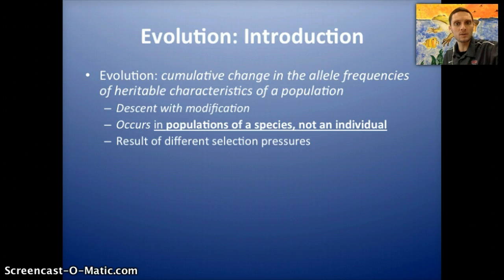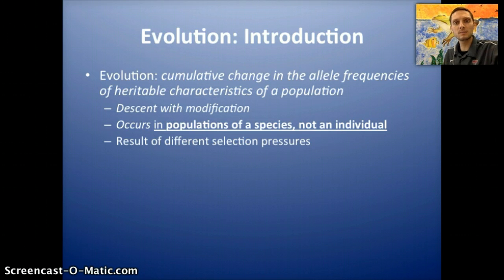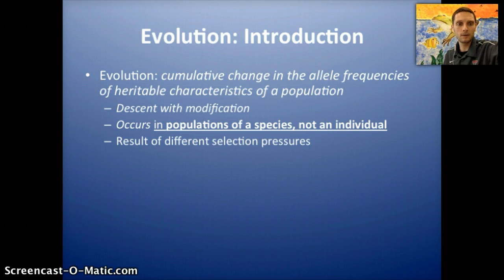Biological evolution is simply the change in the frequencies of different alleles — alleles being different forms or types of traits — and evolution is the change of those traits within a population. This is all possible and happens because of descent with modification: the idea that sexually reproducing organisms reproduce and have offspring that are very similar, but have slight variations or modifications, because of mixing up of genes and alleles during sexual reproduction and mutations.